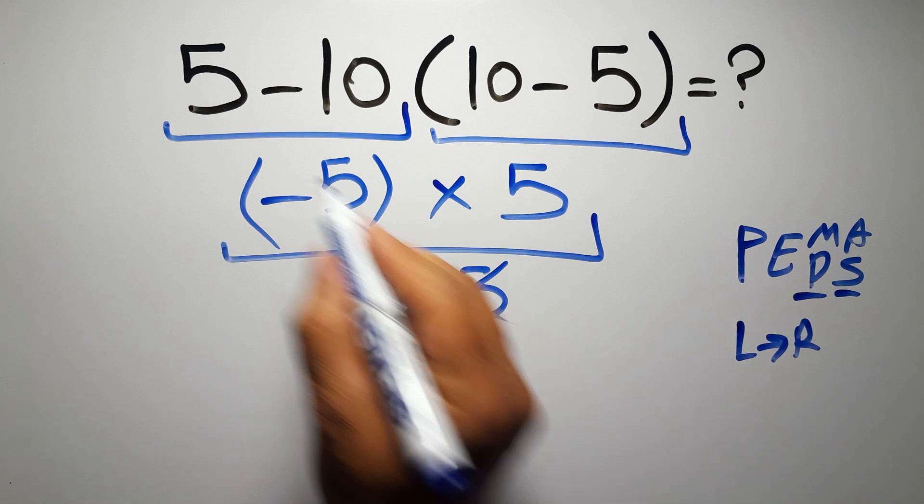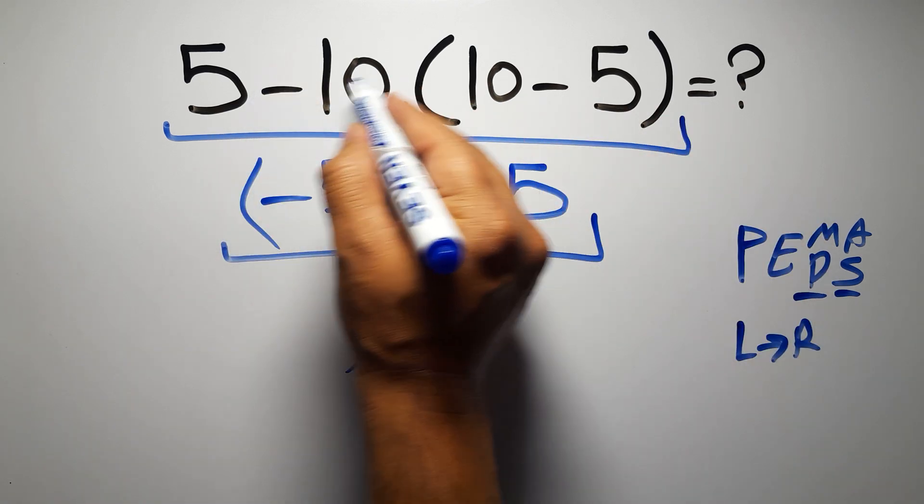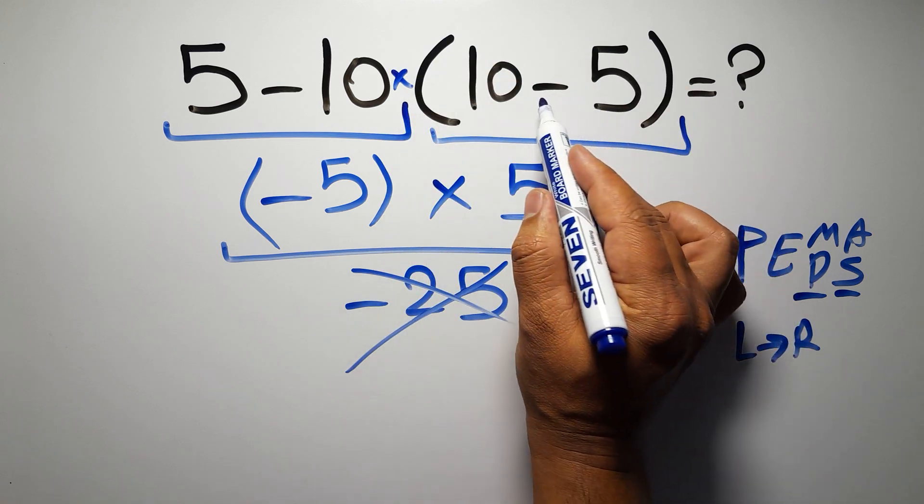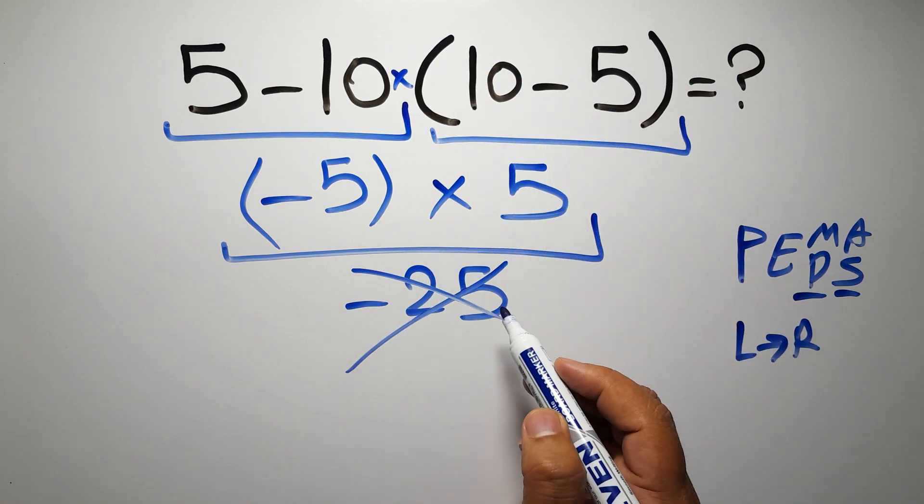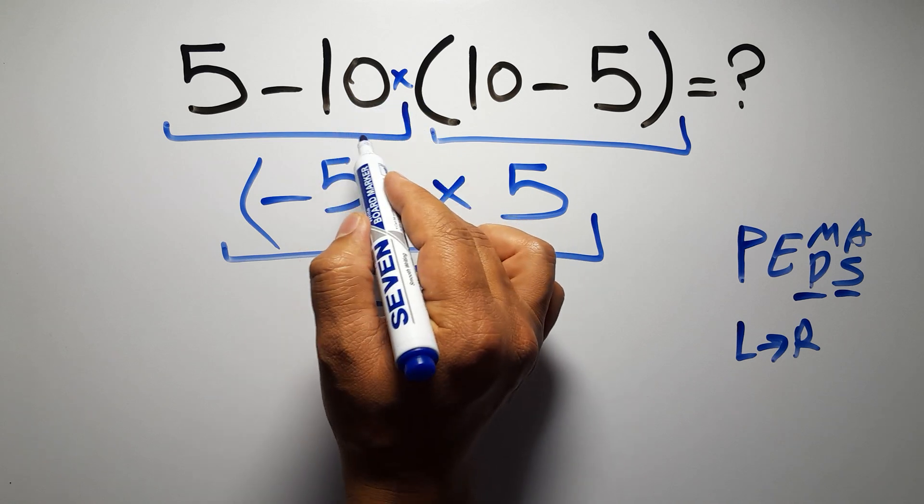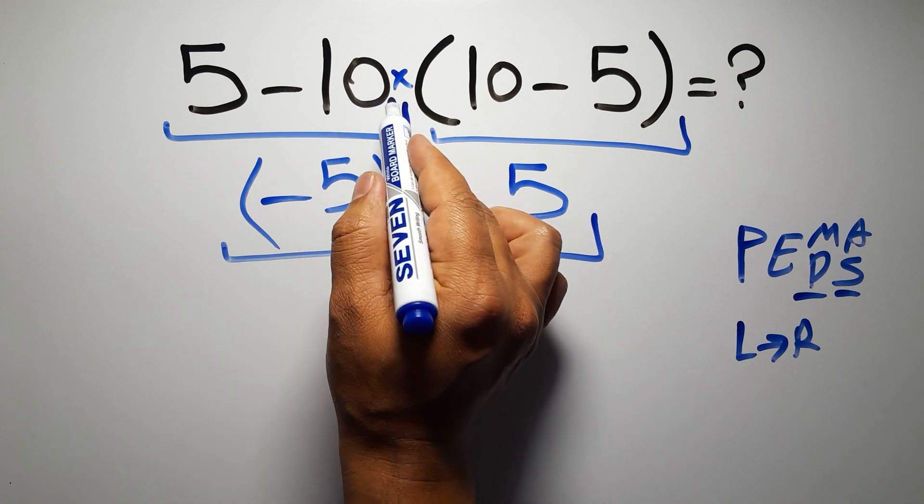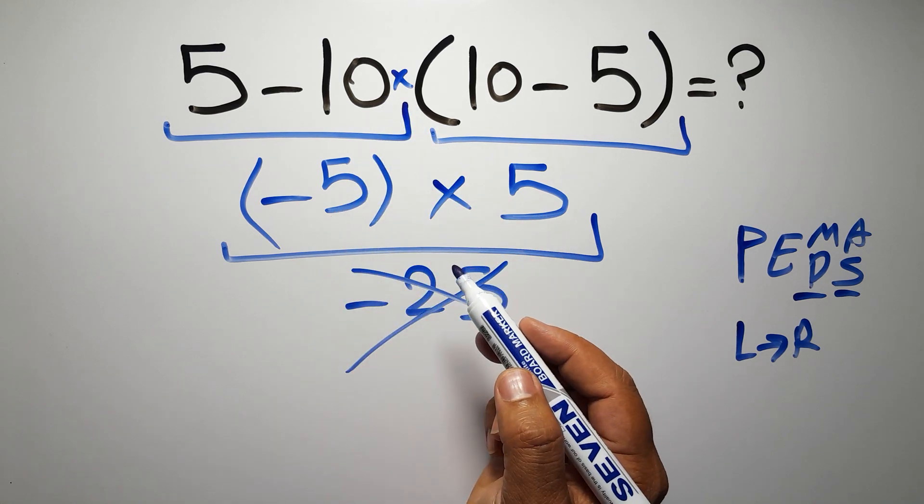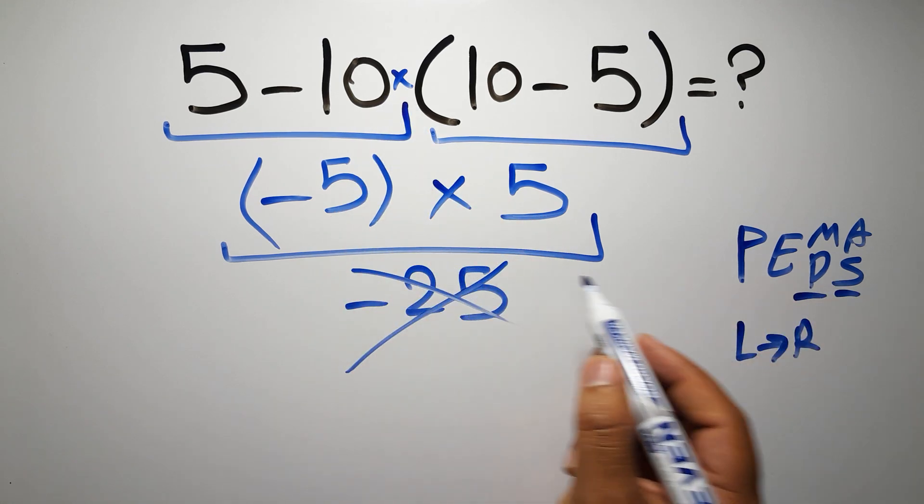In this expression we have one subtraction, one multiplication, and one parenthesis. Inside these parentheses we have one subtraction. Here we have a multiplication because in mathematics when a number is placed next to parentheses it means multiplication, and we usually don't write the multiplication sign for brevity.